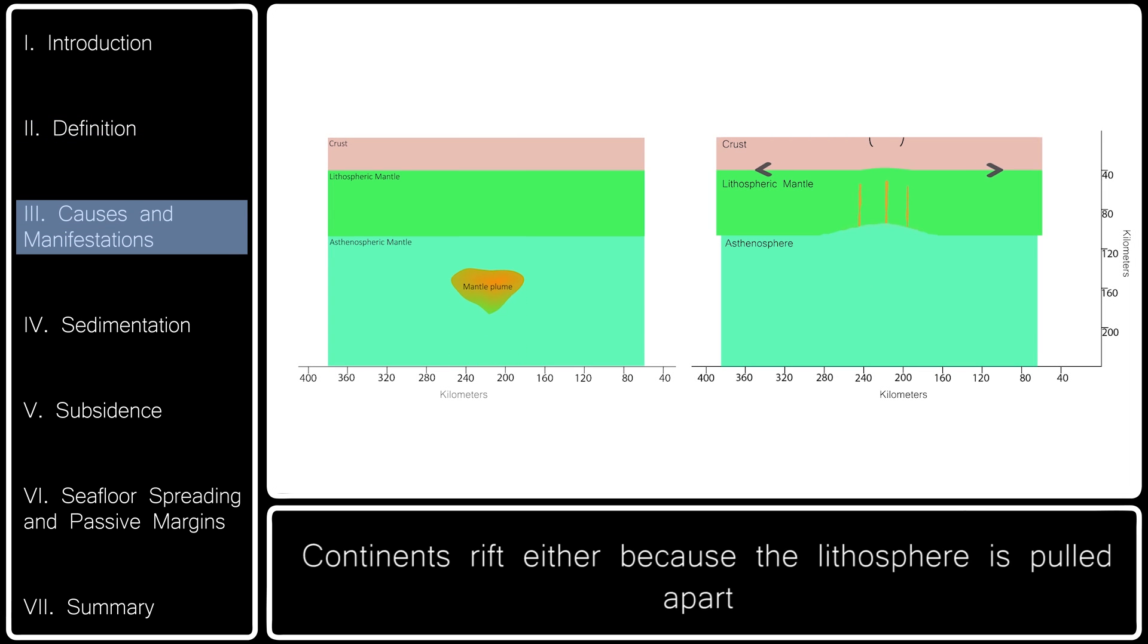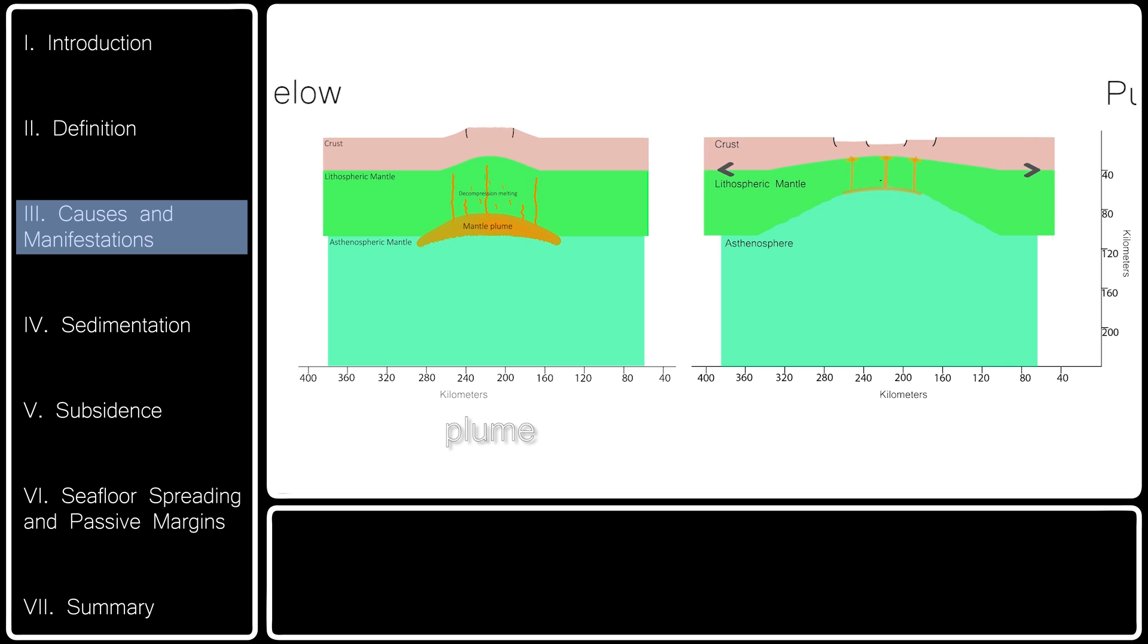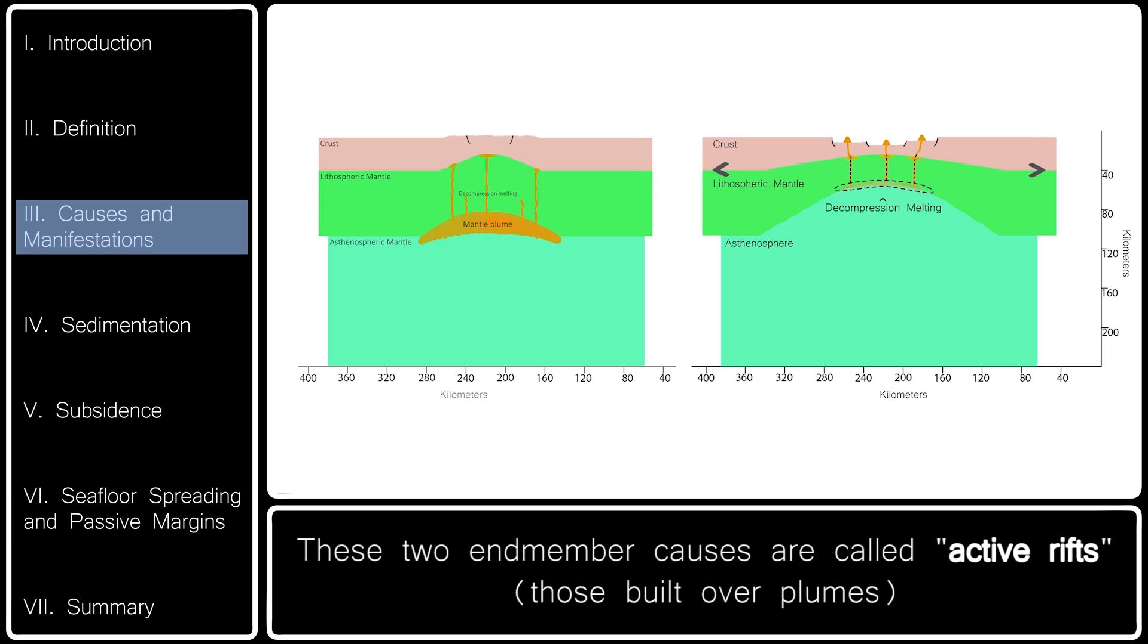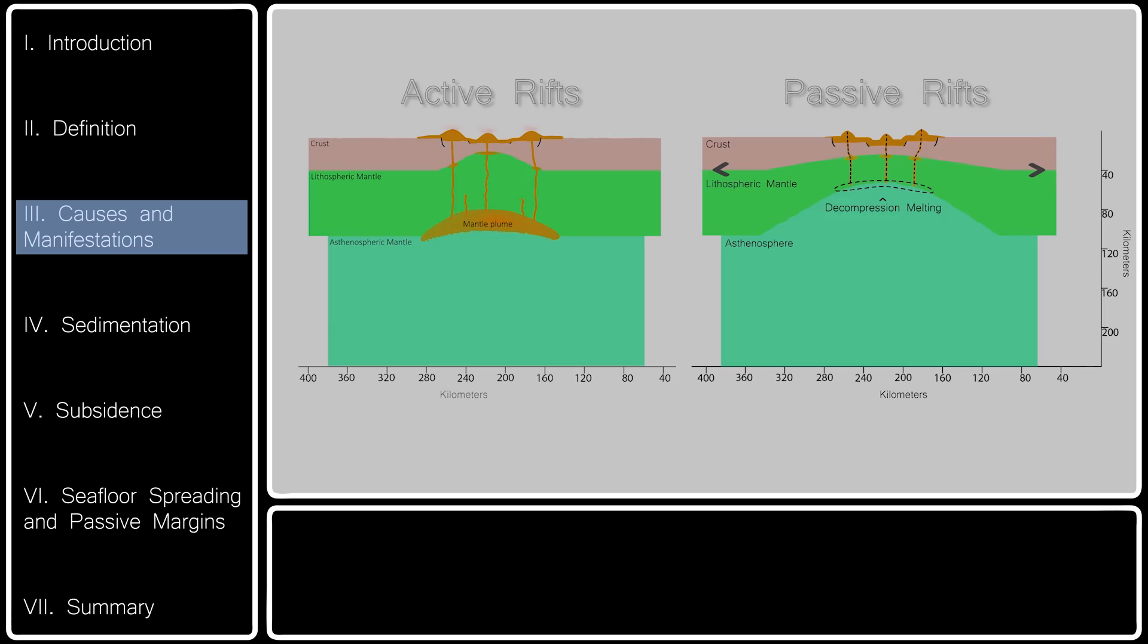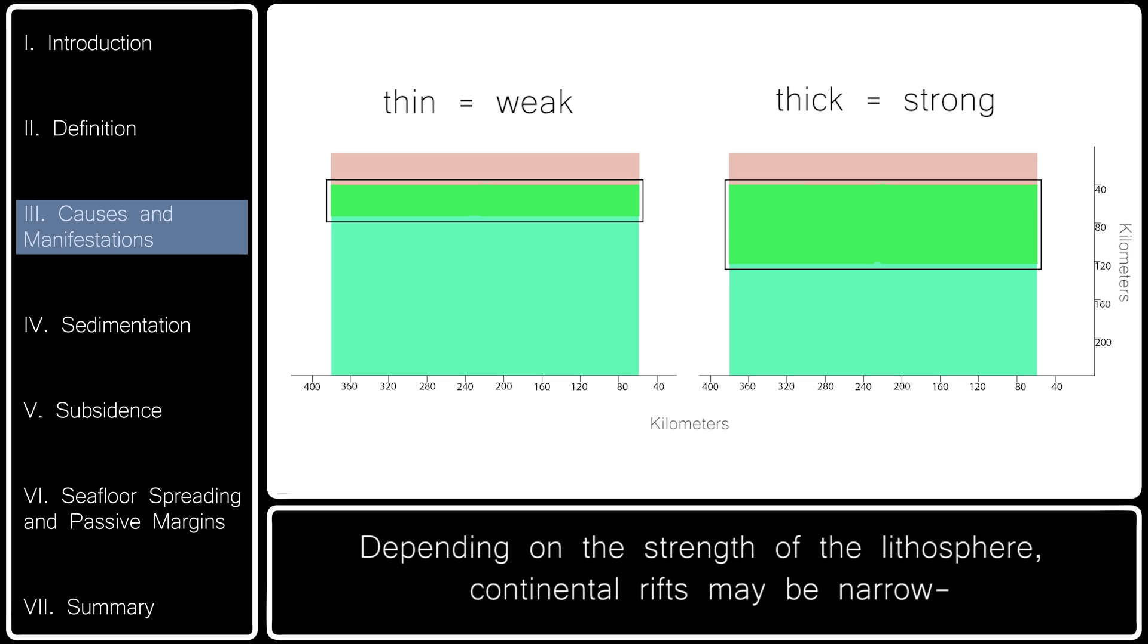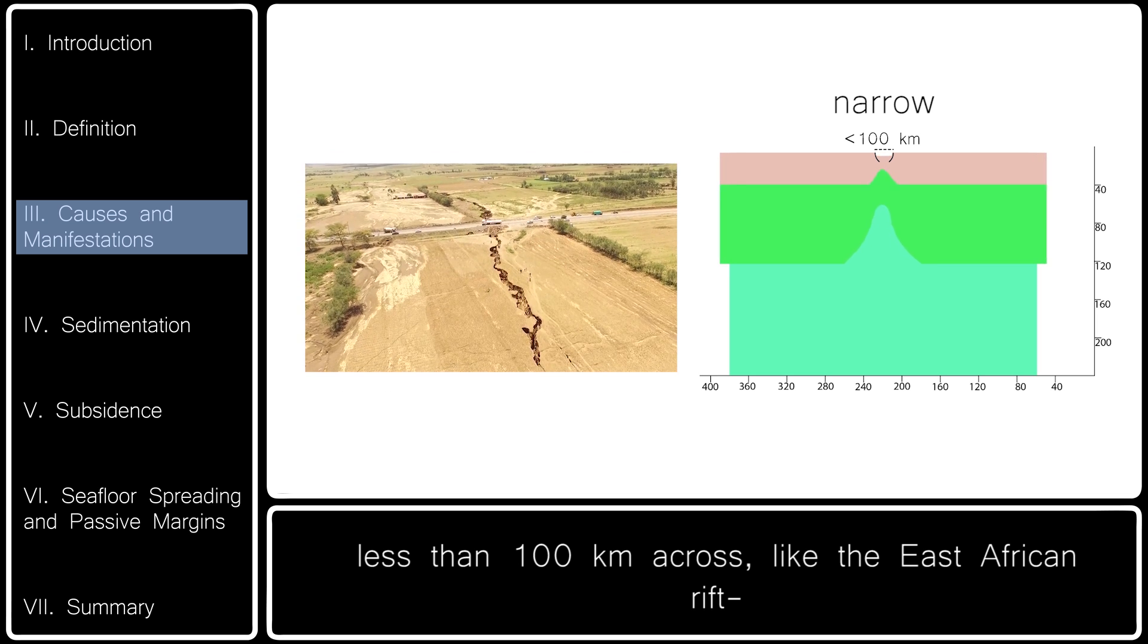Continents rift either because the lithosphere is pulled apart or because it is weakened from below by a mantle plume. These two end-member causes are called active rifts, those built over plumes, and passive rifts, those pulled apart by far-field stresses. Depending on the strength of the lithosphere, continental rifts may be narrow, less than 100 kilometers across, like the East African Rift.